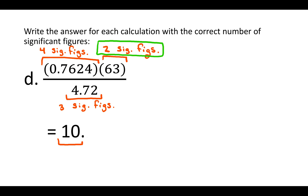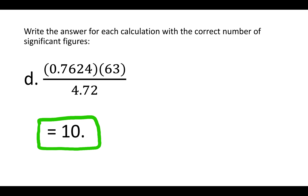Notice you have to keep the decimal point there, because we want two significant figures. Zeros to the right of non-zero numbers are only significant if there's a decimal point. If you got rid of the decimal point, there'd only be one significant figure, and you wouldn't be representing the correct amount of precision. So our answer is really 10 with a decimal point — I know it looks strange, but that's the answer.